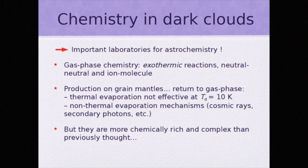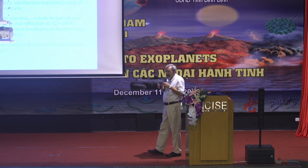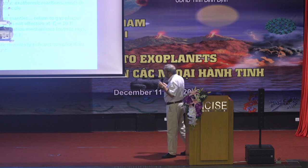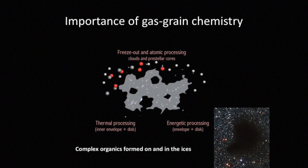Molecules produced in the grain mantles can return to the gas phase through secondary photons. The UV field from the galaxy cannot penetrate the clouds, but cosmic rays penetrating the clouds produce collisions with H2, generating photon emission. These photons can cause photodesorption from grain surfaces. These processes are not very effective, and the abundances of molecules remain low. For many years, in fact, no complex molecules were found in dark clouds — until recently, as the sensitivity of radio telescopes and receivers has increased greatly.